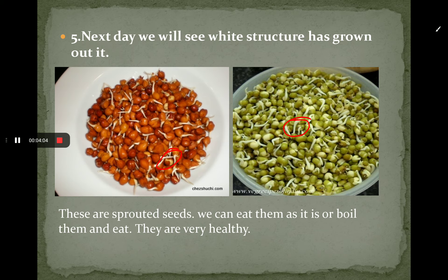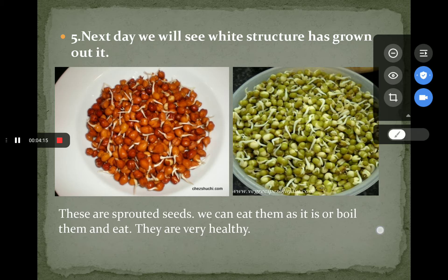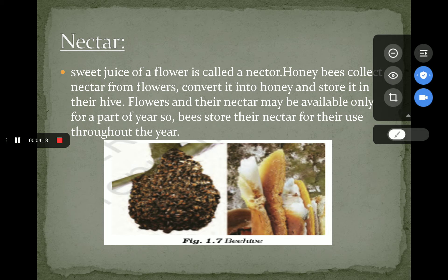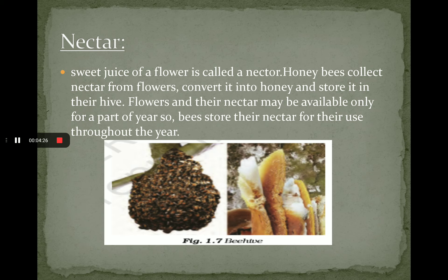These are sprouted seeds. We can eat them as they are or boil them, and they are very healthy for the heart. Now, in the next slide, we study about nectar. Nectar is simply defined as the sweet juice of a flower. Nectar is collected by honeybees. Honeybees collect the sweet juice of flowers and store it in their hive. It is not available throughout the year, so honeybees collect it in sufficient amounts so that they can use it throughout the year.